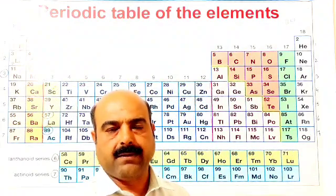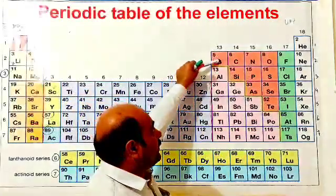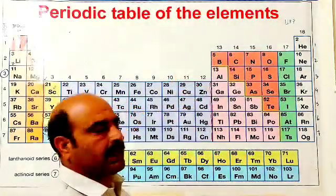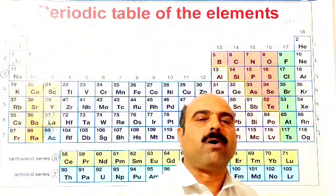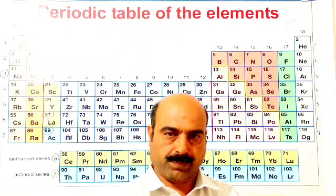And what are groups? The vertical columns of elements from top to bottom in the periodic table of elements are called groups.